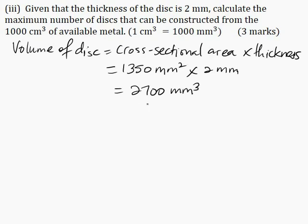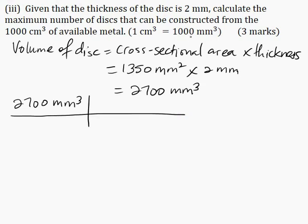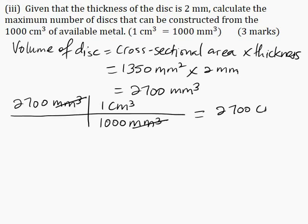Now I need to convert 2700 mm³ to cm³ using the conversion factor: 1000 mm³ equals 1 cm³. Therefore, 2700 mm³ equals 2.7 cm³.